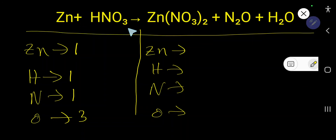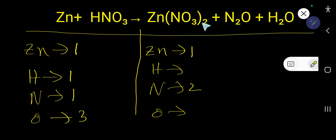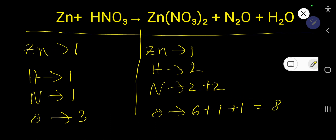How to balance Zn plus HNO₃ that produces Zn(NO₃)₂ plus N₂O plus H₂O. On the right-hand side, the number of zinc is 1. The number of nitrogen: this subscript is common to everyone, so 1 times 2 equals 2 nitrogen. Then we have oxygen — multiply the subscripts together, that is 6 oxygen. Here we also have 2 nitrogen and 1 oxygen, and 2 hydrogen and 1 oxygen. So basically we have 8 oxygen and 4 nitrogen. Nitrogen is present in 2 compounds and oxygen is present in 3 compounds.